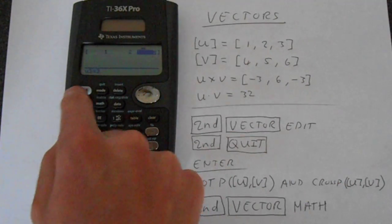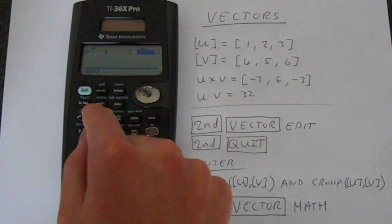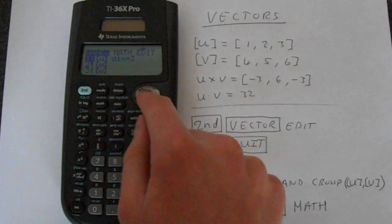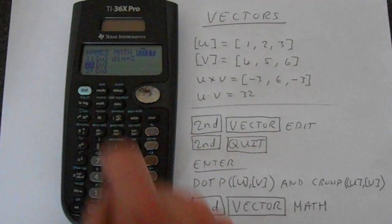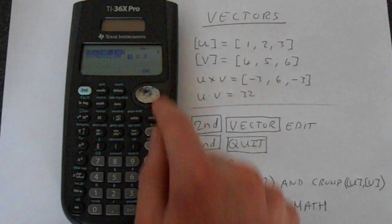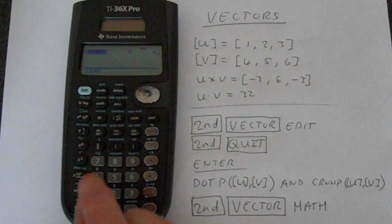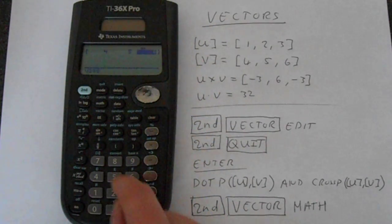Second function, then go to vector again, and go across to edit, and then edit vector v. And then we're going to make this 3 again, and then just 4, 5, 6, exactly the same.